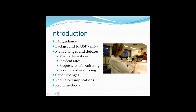This presentation will look at some environmental monitoring guidance, particularly how the USP chapter should be seen in context, a little bit about the background to the USP 1116 chapter, how and why did it change, and touch on some of the main changes and potential debates such as areas of method limitations, the move towards assessing environments through incident rates, questions about frequencies of monitoring, and locations of monitoring. We'll also look at some of the other perhaps minor but important changes, the regulatory implications arising from the changes, and also attempt to link how some of the changes in the USP help with the advancement of rapid and alternative microbiological methods.